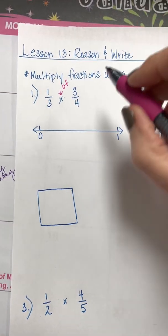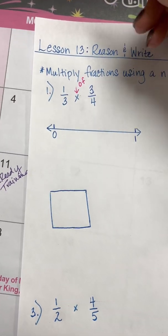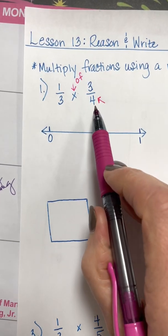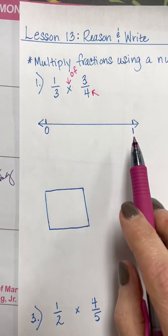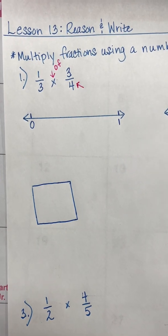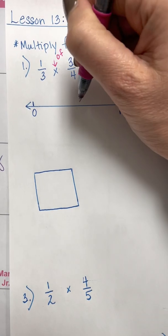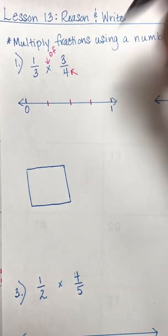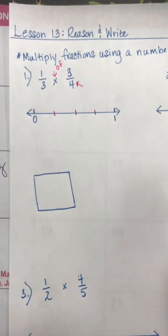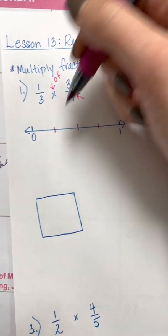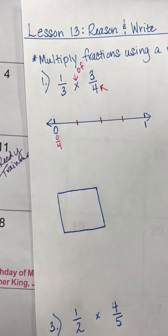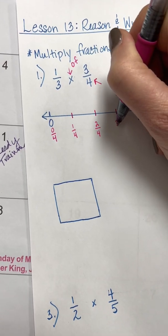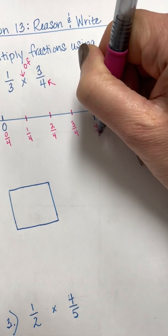The second number is going to tell us how to split up our initial number line. We're going to first look at the denominator, which is four. So between zero and one, we need to split this up into four equal pieces — we're going to be splitting it into fourths. I like to find the center, which will be one-half, and then take half of each of those halves to get fourths. So we have four equal pieces. Let's label them: zero-fourths, one-fourth, two-fourths (or one-half), three-fourths, and four-fourths, which is one whole.